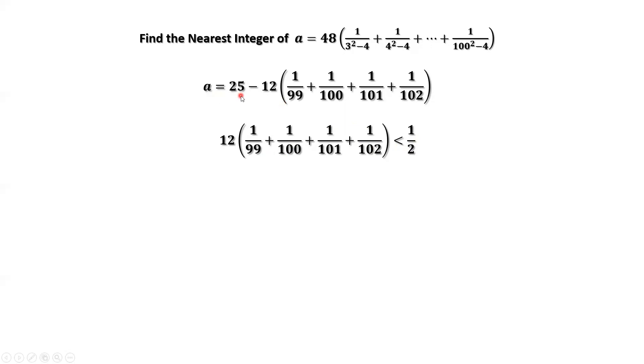A equals 25 minus a number, which is positive and less than 1 half. What does this mean? This means the nearest integer of A is 25.